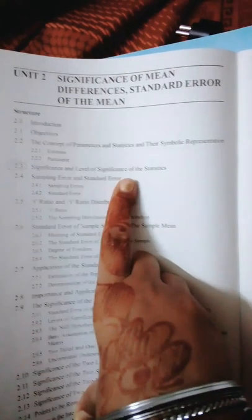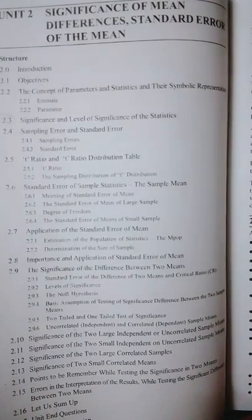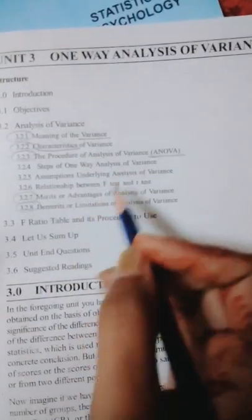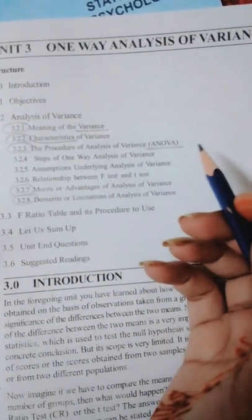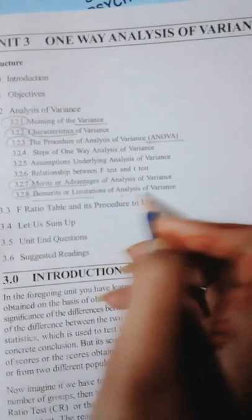From second chapter you can read this: the level of significance of statistics, meaning of variance and its characteristics. Then ANOVA procedure if you want. You can read the procedure but you can read this: merits and demerits of analysis of variance or ANOVA.